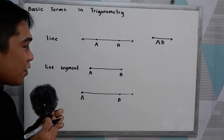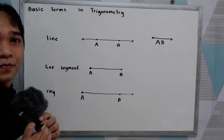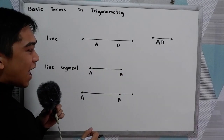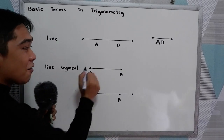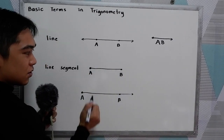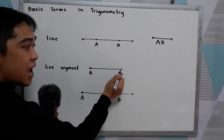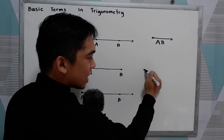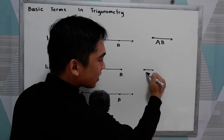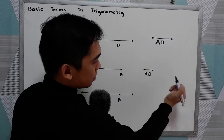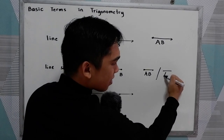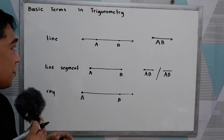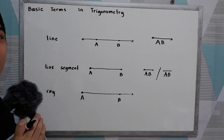The second one is the line segment. We have two points. Notice that in our line segment, we have endpoints. So here we have A and B. We can name this as segment AB. That's the difference between the line and the line segment.